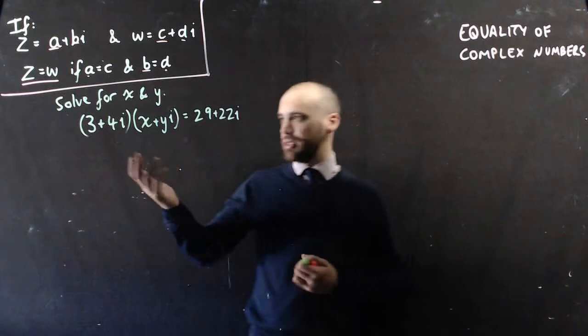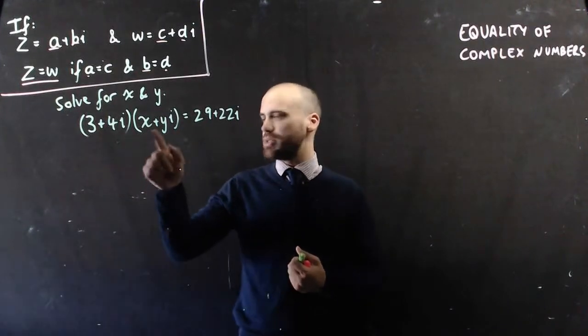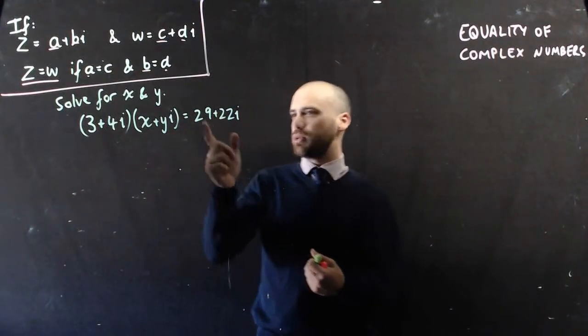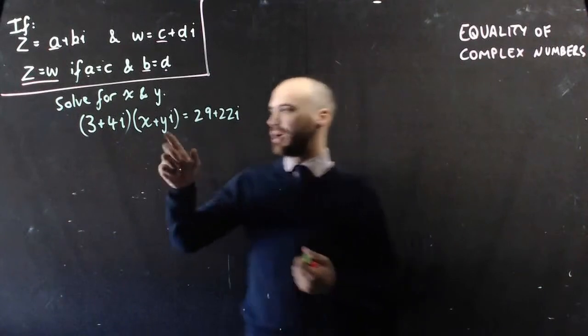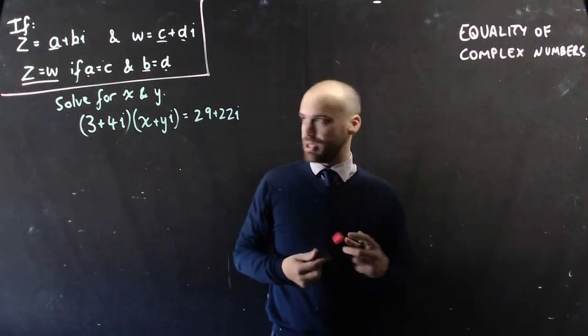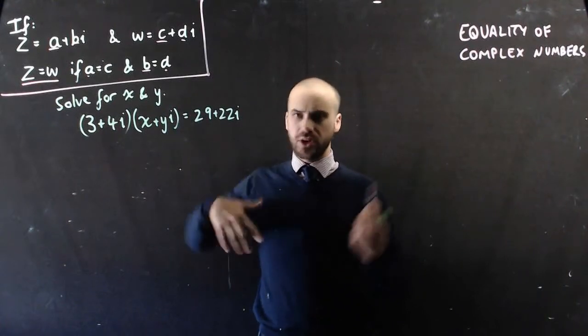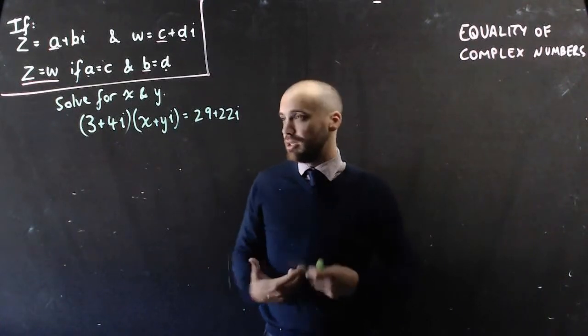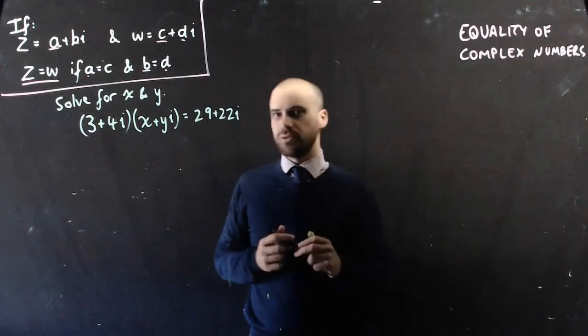So if we've got a question like this: (3 + 4i)(x + yi) = 29 + 22i, we can solve it for x and y. We can find out what those unknown values are. You might want to pause the video here and just do it, because you probably can. Otherwise, I'm going to start doing it right now.